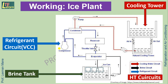The refrigerant in the primary circuit, ammonia, absorbs heat from the brine solution at the evaporator and cools the ethylene glycol down to a temperature of minus 18 degrees Celsius. The cooled brine then receives heat from the water placed in the cans until it is totally converted into ice at minus 6 degrees Celsius.